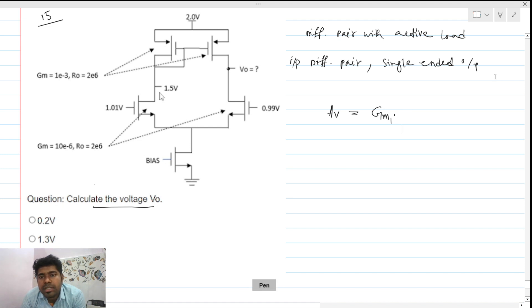R out is nothing but ro p parallel r on, right? We know that. And the sign of this gain will be positive. Here we have a fully differential input applied.